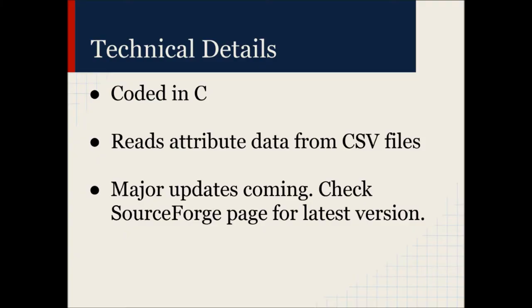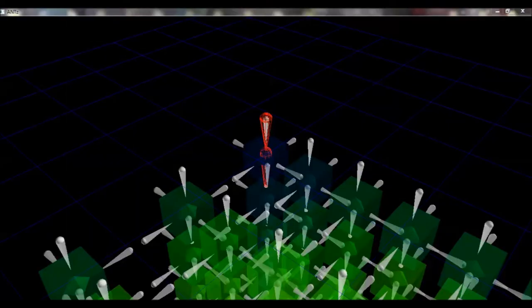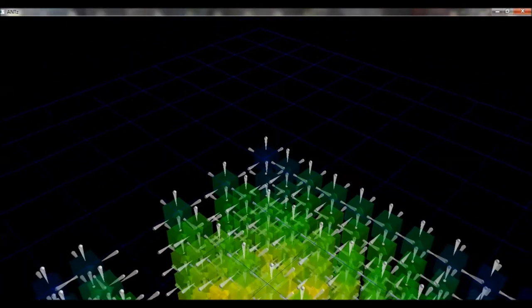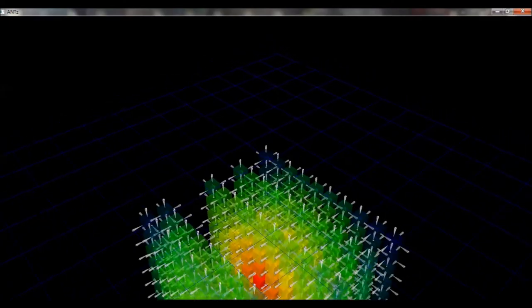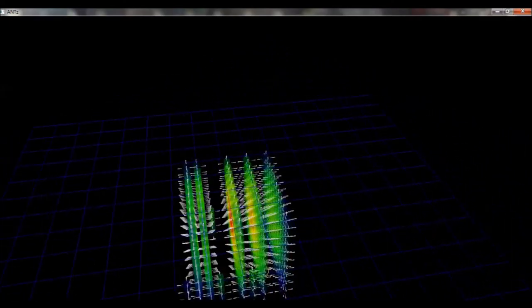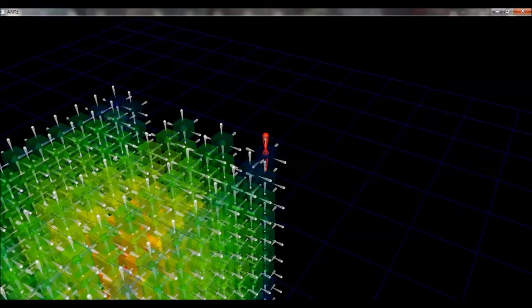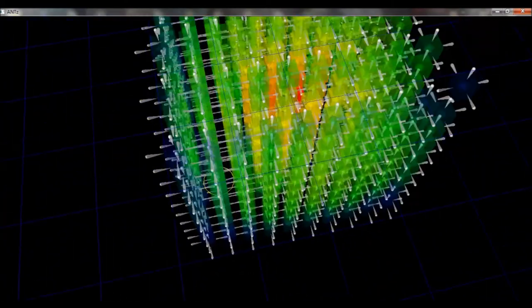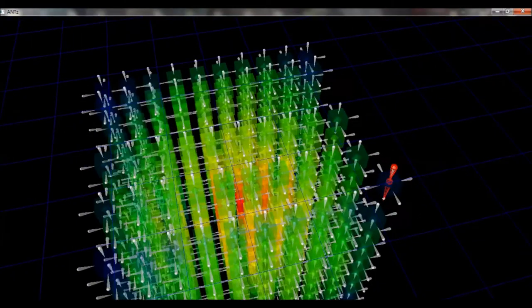A few technical details about ANTS: ANTS is coded in C and reads attribute data from CSV files. In cases where textures, object tags with text, or channel data are being used, ANTS is referencing several CSV files. Textures for mapping to the surface of an object can be read from standard image file formats such as JPEG or PNG.